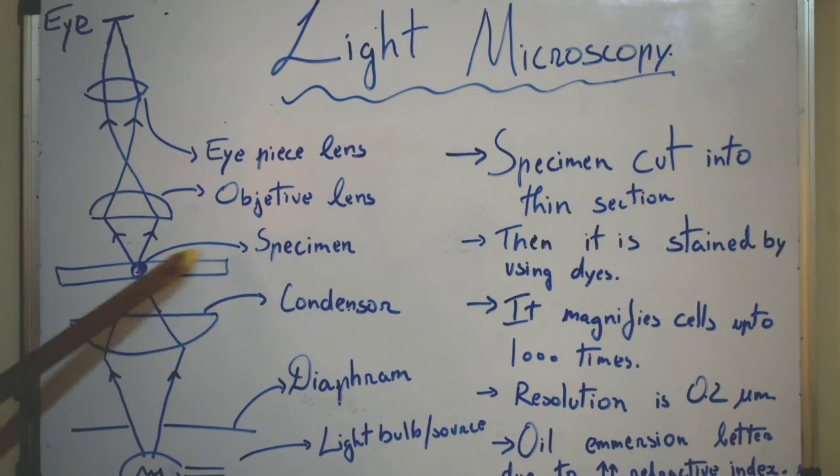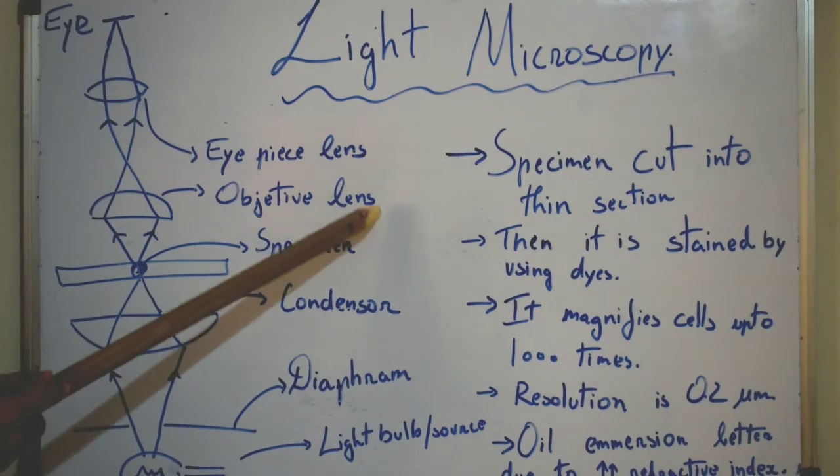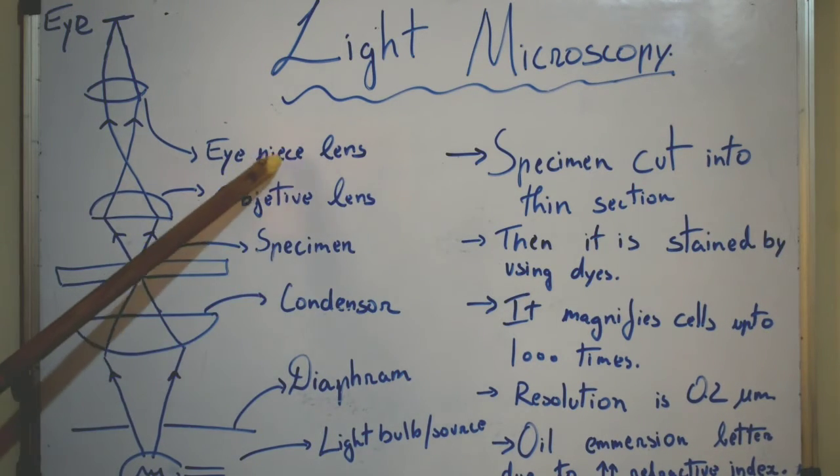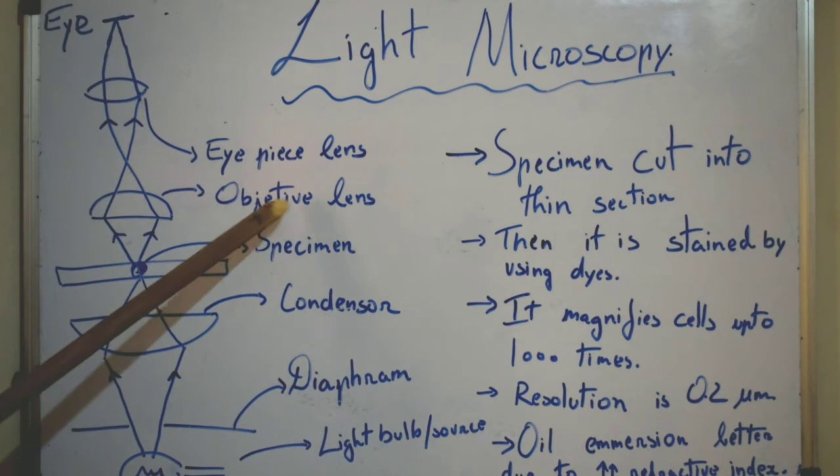Now once reaching the specimen there are two types of lens which are to be known. One is eyepiece and second is objective lens. The lens which is near the eye is known as eyepiece and near the specimen is known as objective lens.